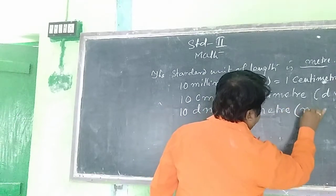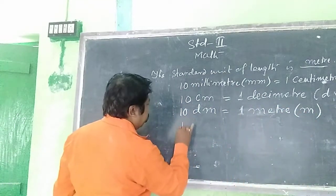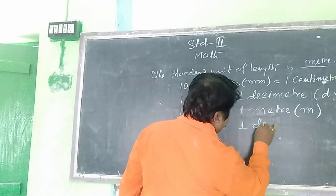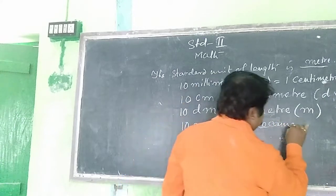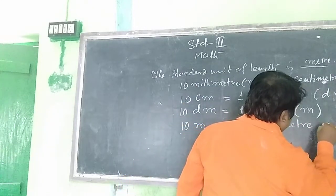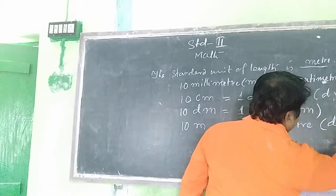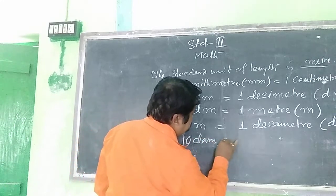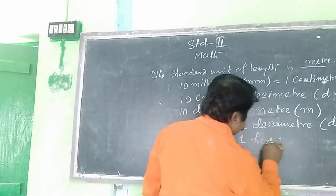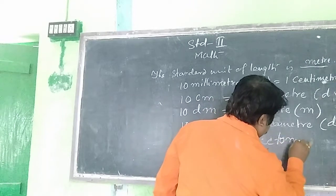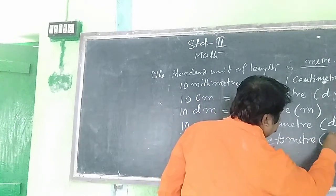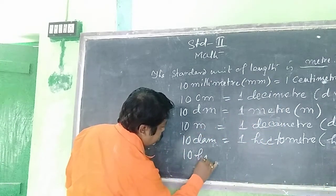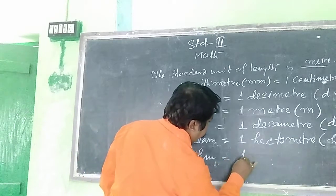Short form of meter is m. Ten meters equals one decameter. Short form of decameter is DAM. Ten decameters equals one hectometer.